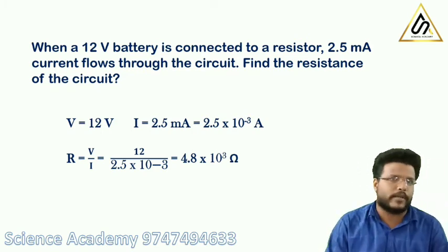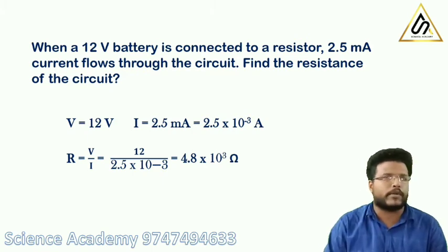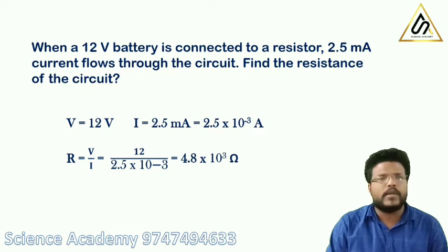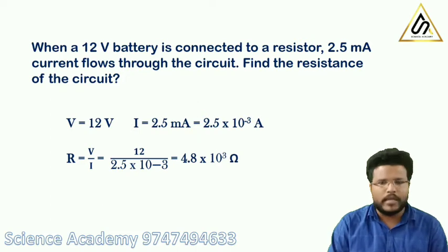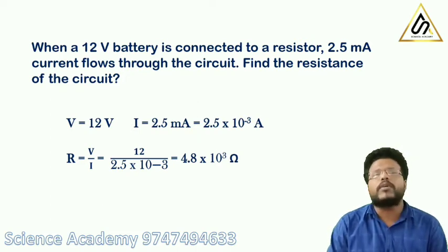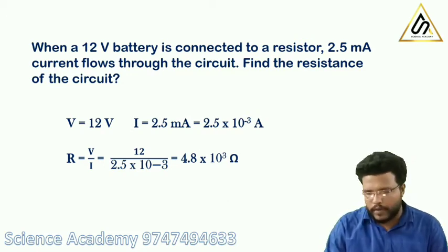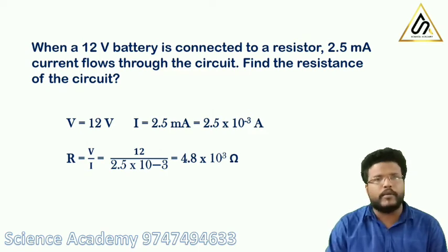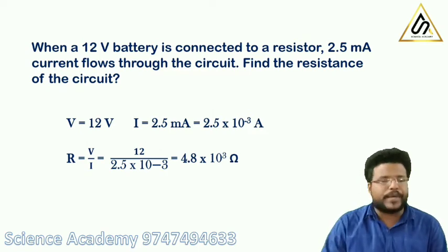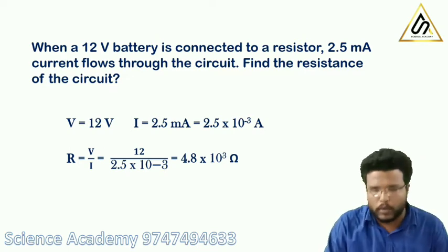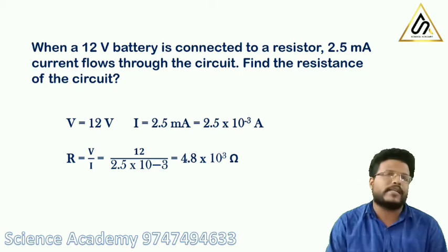Converting milliampere: 2.5 mA equals 2.5 into 10 raised to minus 3 ampere. Using R equals V by I, substituting V equals 12 and I equals 2.5 into 10 raised to minus 3. This gives R equals 12 divided by 2.5 into 10 raised to minus 3, which equals 4.8 into 10 raised to 3, that is 4800 ohm.